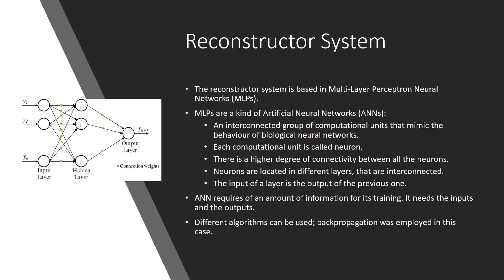As mentioned before, in this work a new reconstructor system is designed based on a multilayer perceptron neural network, a kind of artificial neural network. An artificial neural network can be defined as an interconnected group of computational units called neurons, that try to mimic the behavior of biological neural networks. The neurons are situated in different layers and are interconnected by nodes. The input information of a layer becomes the output feeding the next.